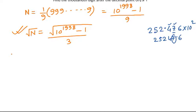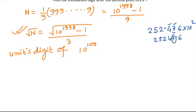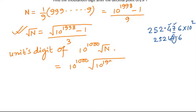We can apply this concept here. Since we are looking for the thousandth digit after the decimal, that is going to be the units digit of 10^1000 × √N — that is, the units digit of 10^1000 × √((10^1998 - 1) / 3).